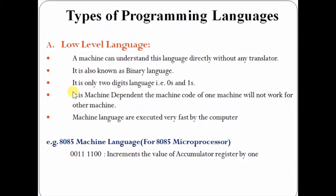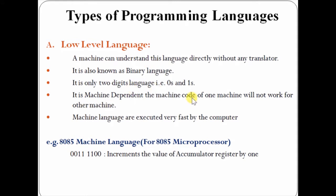First we will consider low level language. In low level language, instructions are written in the form of 0 and 1 only. Since machines understand only 0 and 1, if we write a program in low level language, a machine can understand this language directly without any translator. It is also known as binary language. It is machine dependent, meaning the instructions written for a particular machine will only work on that particular machine.